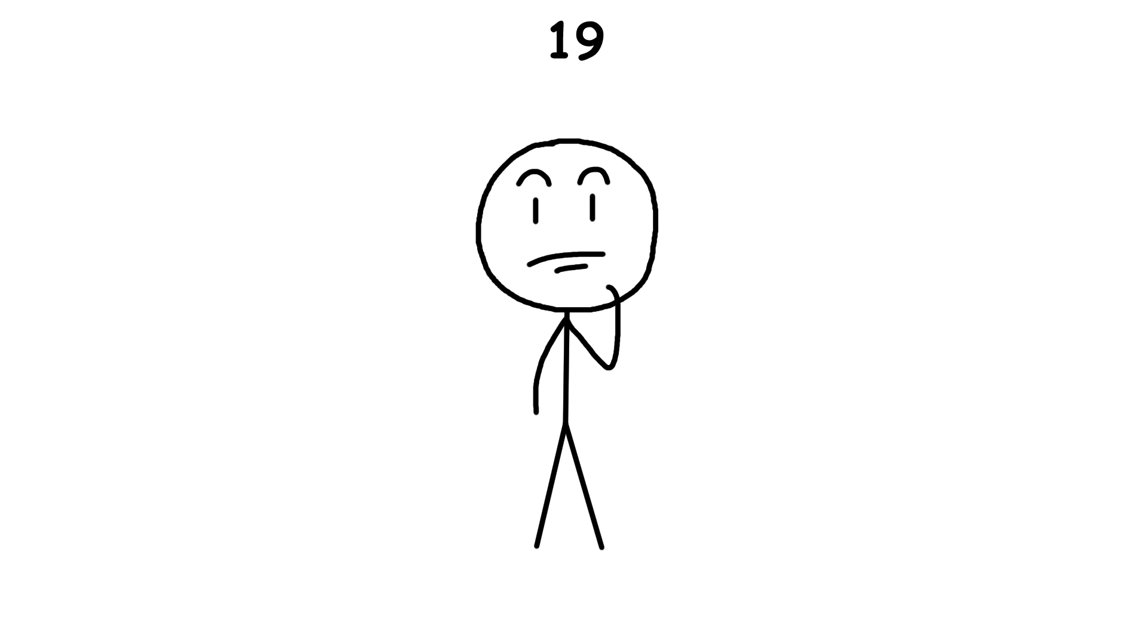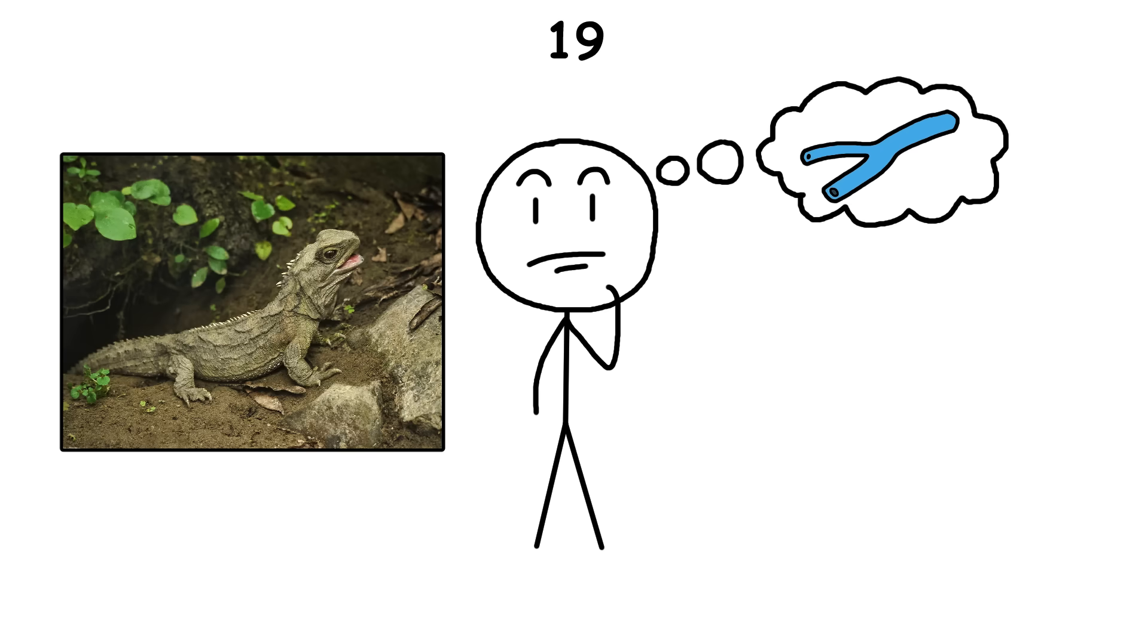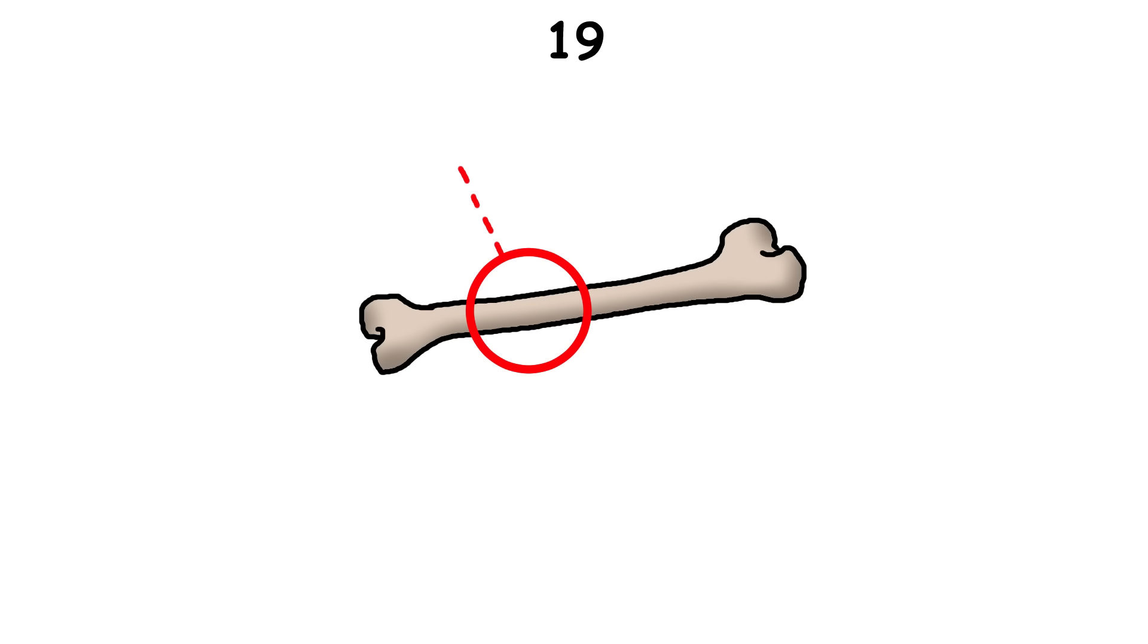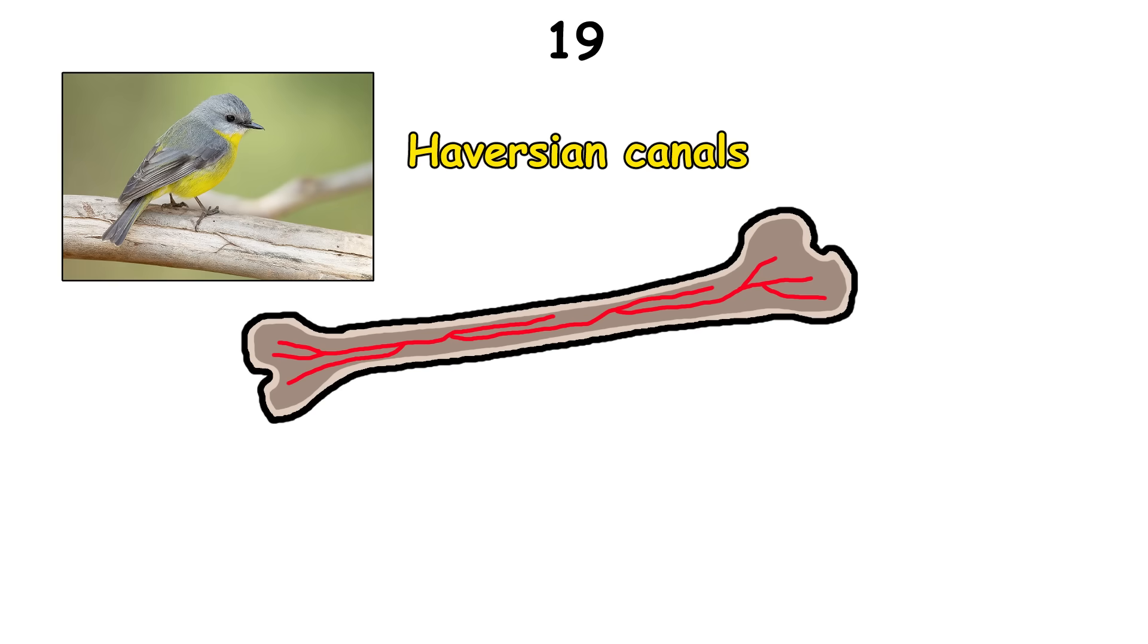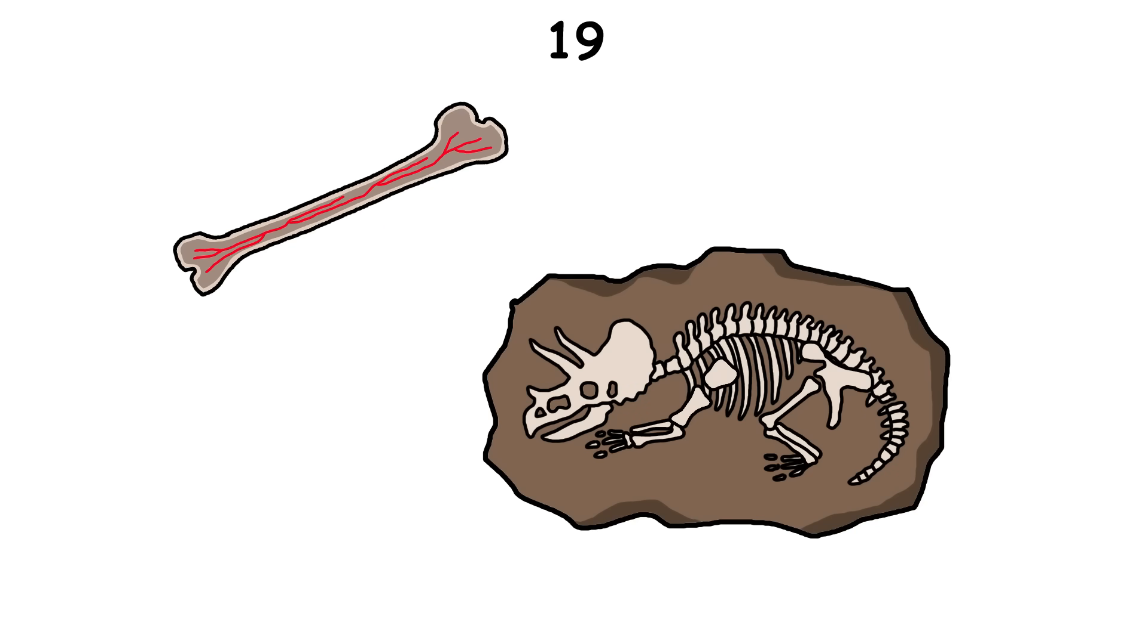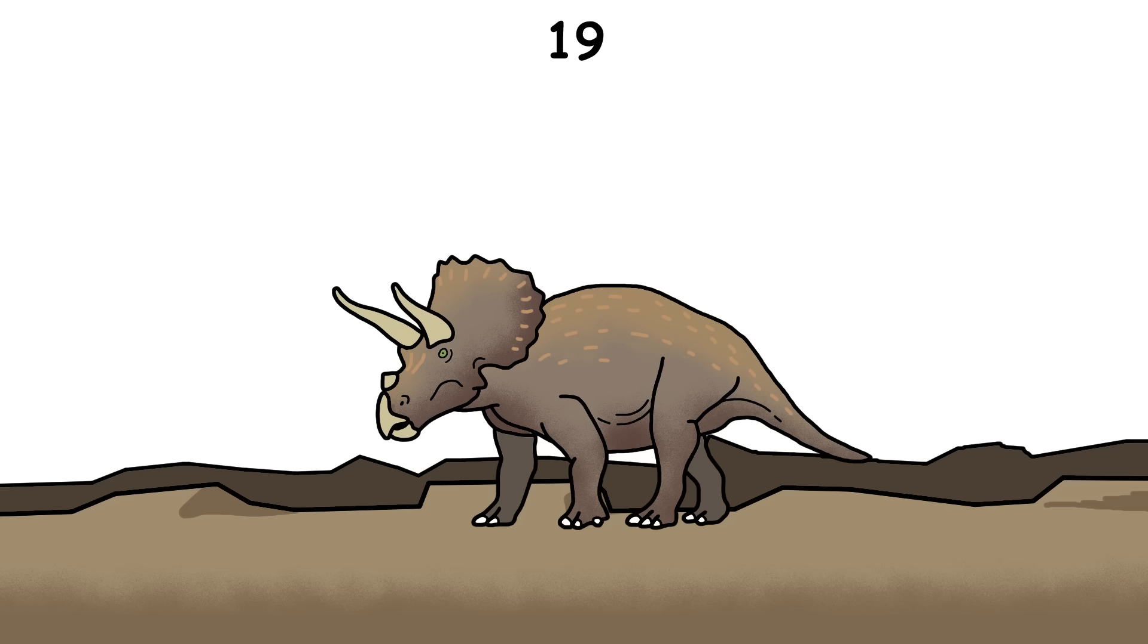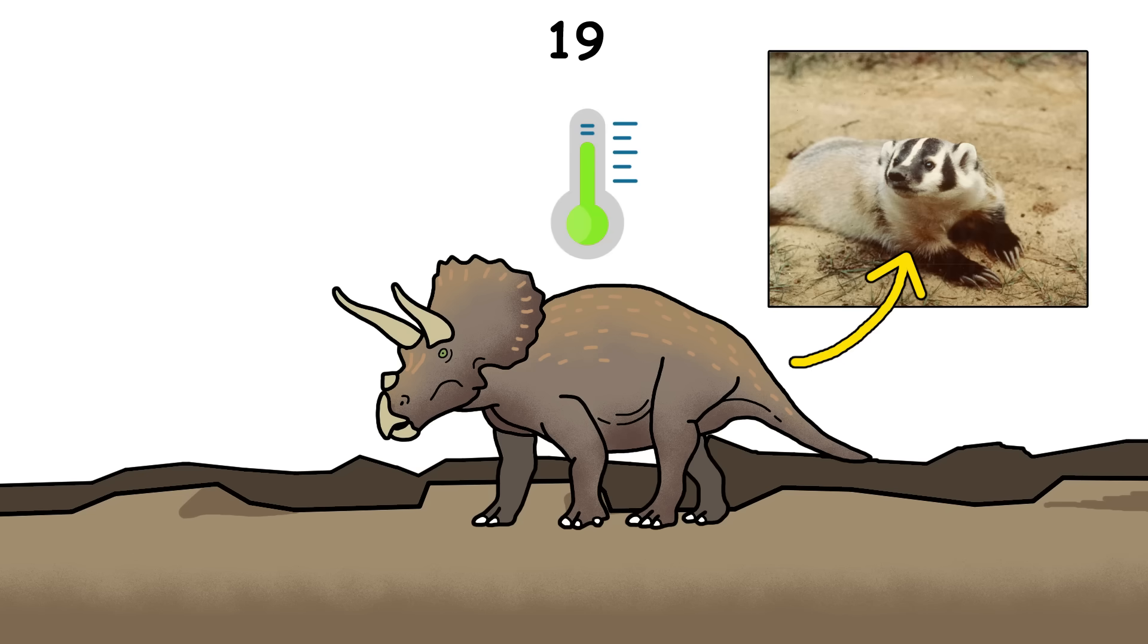For decades, people thought dinosaurs were cold-blooded like reptiles, but when scientists studied their bones, they found signs of warm-bloodedness. Tiny blood channels called Haversian canals, found in warm-blooded animals like birds and mammals, were also found in dinosaur fossils. This suggests many dinosaurs kept their body temperature steady, like mammals do.